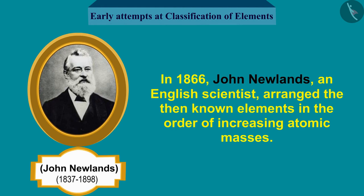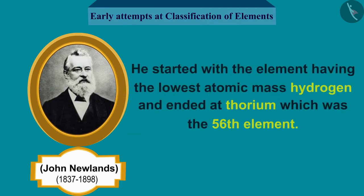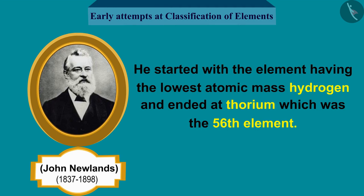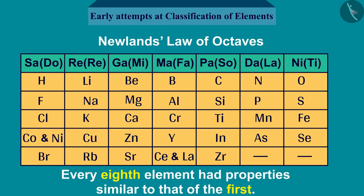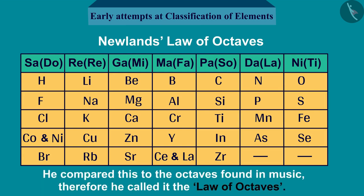In 1866, John Newlands, an English scientist, arranged the then-known elements in the order of increasing atomic masses. He started with the element having the lowest atomic mass, hydrogen, and ended at thorium, which was the 56th element. He found that every eighth element had properties similar to that of the first.